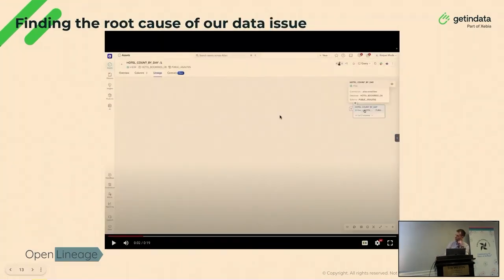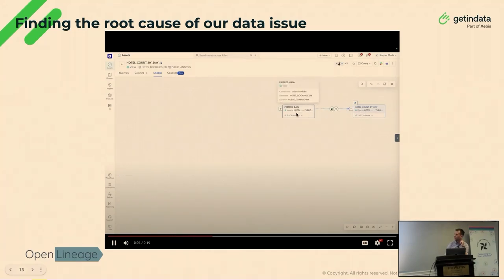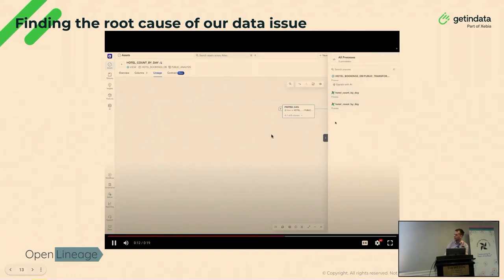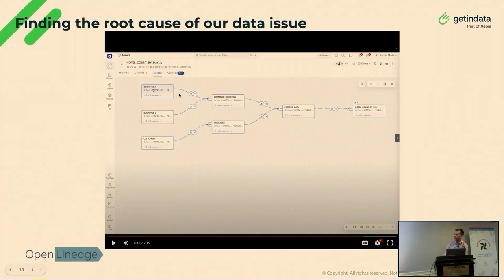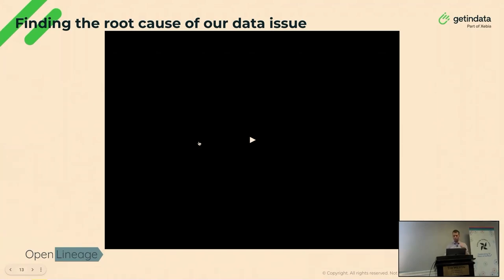Let's do some quick root cause analysis for a data issue. We have a dataset where we found an issue and want to know where it's coming from. We have our Snowflake table and the data is coming from this table. We can see the process that generated the data — there is an Airflow task. And we can trace it back with a lineage graph all the way to the very beginning, to see what is the source table that has the raw data.